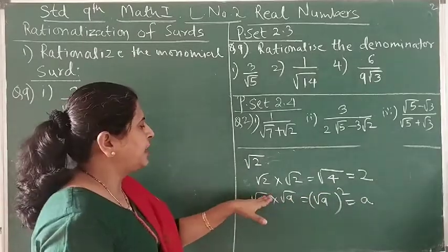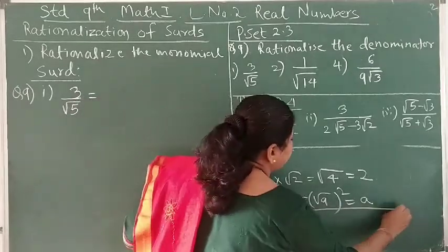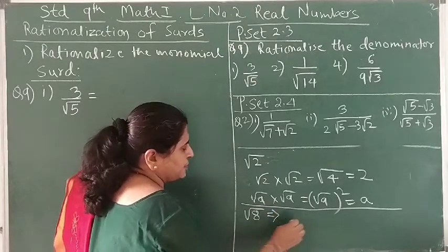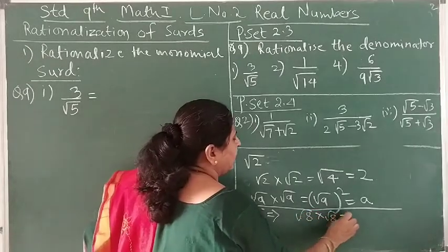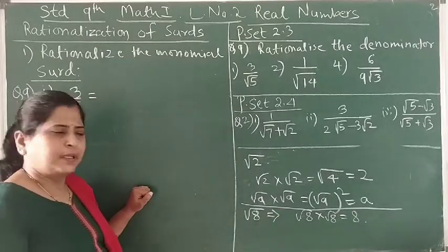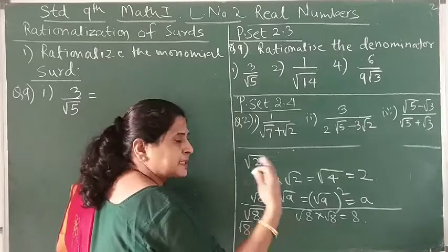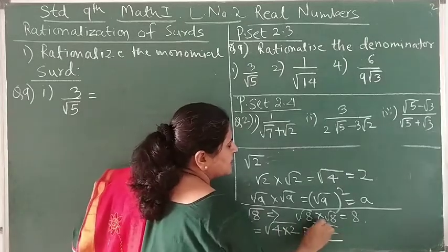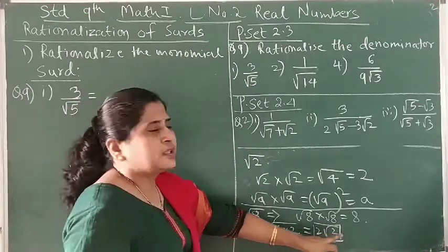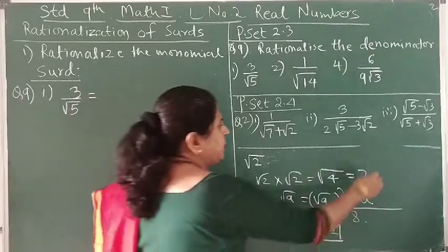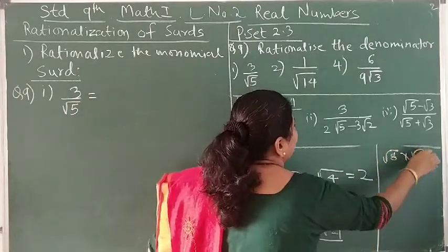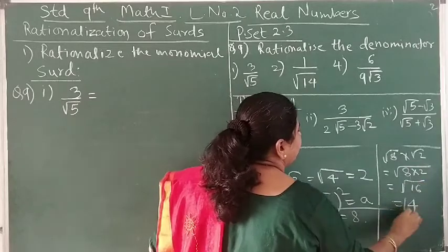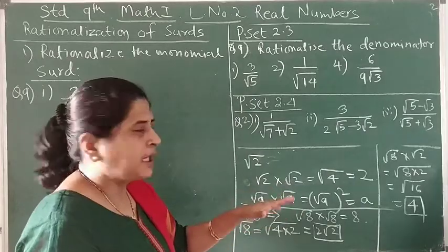But is it necessary to multiply by the same number every time? For example, if the irrational number is square root of 8, we could multiply by square root of 8, but that's not always required. Square root of 8 in simplest form is 2 root 2, where 2 is rational and root 2 is irrational. So even multiplying square root of 8 by square root of 2 gives square root of 16, which is 4. So it is not necessary to always multiply by the same number.